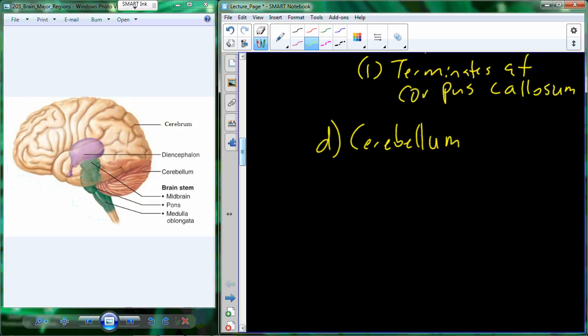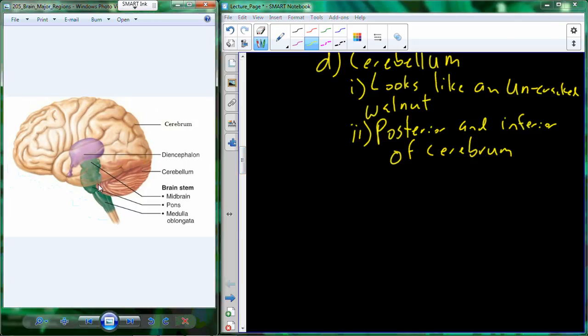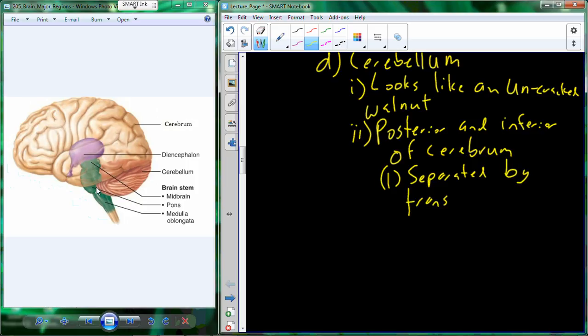The cerebellum, again, this is the tissue that looks like an uncracked walnut. Positionally, this is going to be located posterior and inferior of the cerebrum. In those two tissues, there's actually going to be another fissure that separates these two portions of tissue, separated by the transverse cerebral fissure.